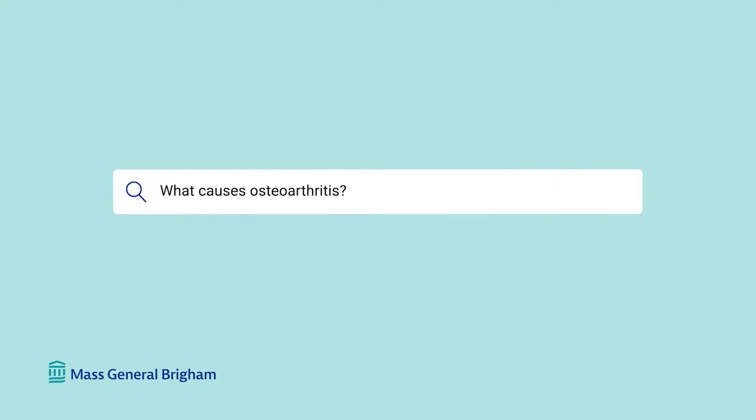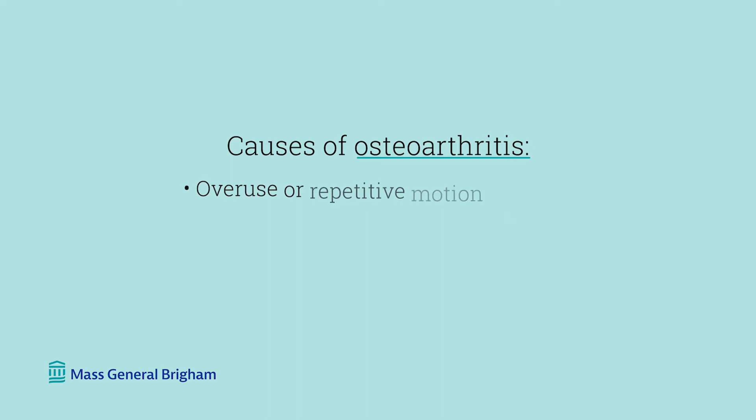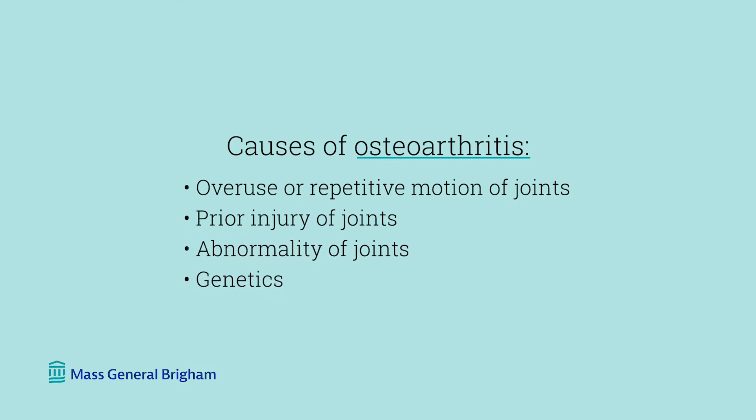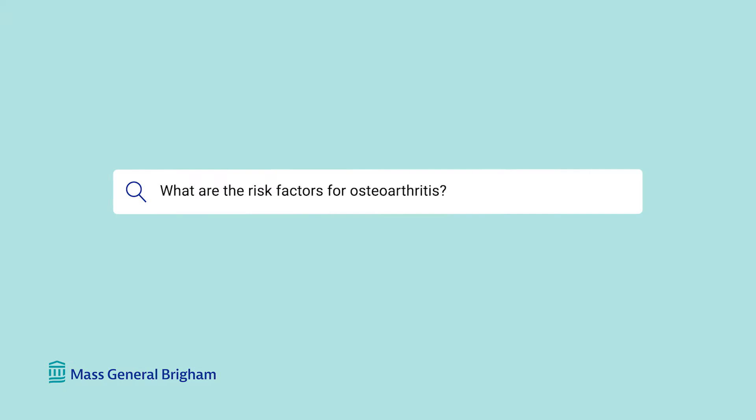What causes osteoarthritis? Some things that predispose patients to osteoarthritis include overuse or repetitive motion of joints, prior injury of joints, abnormality of joints, and genetics. One study has revealed that the lifetime risk for a person to develop osteoarthritis of the knee is almost 50%, and to develop osteoarthritis of the hip is about 25%.